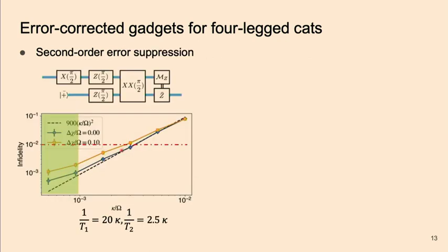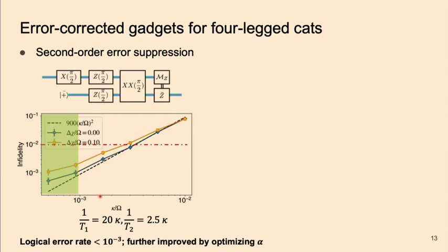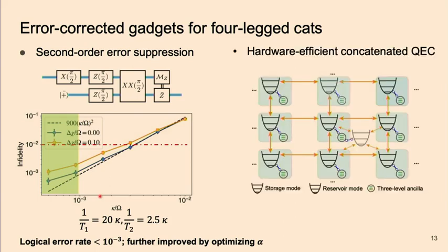We can convince you with numerical evidence that all logical errors are suppressed to second order of the physical error rate, even when we have finite chi matching in the physical system — and of course we can also prove this analytically. We want to emphasize that logical errors can be far below 10^{-3} using current experimental parameters, which means you can really use these error-corrected qubits for a second-level code far below the current error threshold to reduce overhead. This basically gives you a hardware-efficient concatenated quantum error correction architecture, where each base error-corrected logical qubit uses only a single bosonic mode and a three-level ancilla, and only needs simple beam-splitter couplings between bosonic modes to do surface code experiments.